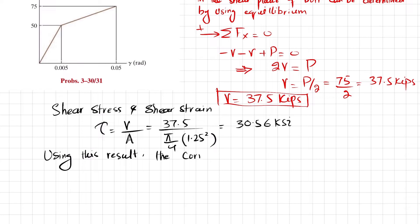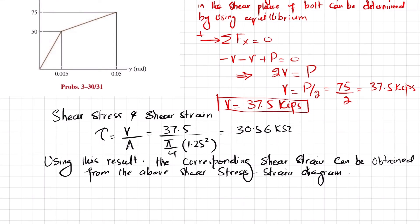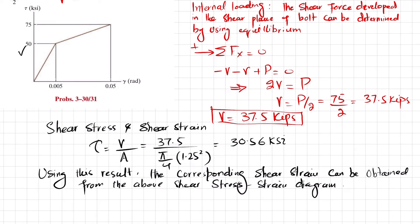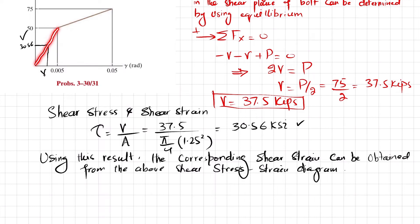Using this result, the corresponding shear strain can be obtained from the shear stress-strain diagram. You can see the shear stress-strain diagram here. The shear stress is 30.56 ksi — let's locate that on the diagram. The corresponding shear strain gamma is unknown. We will use this graph to find it. Notice that this portion is a straight line so the slope is constant.